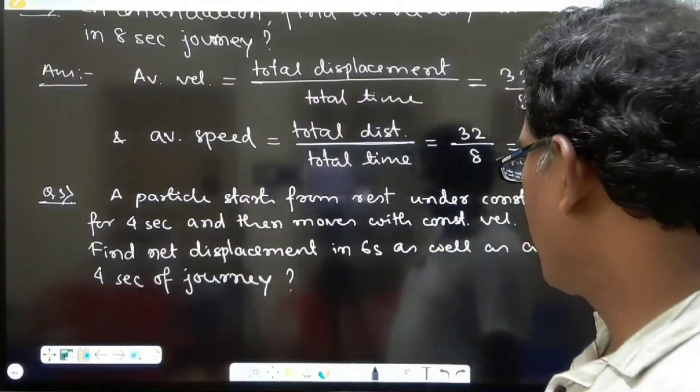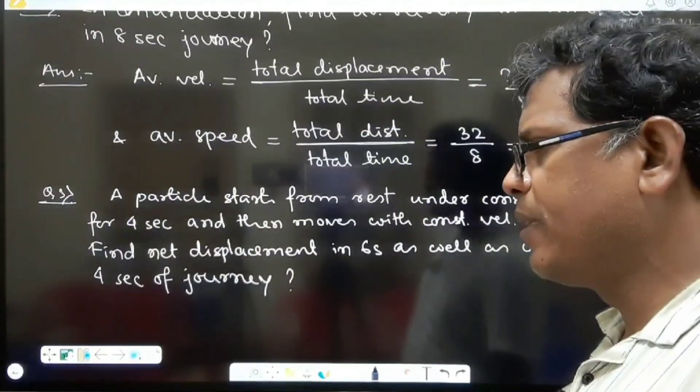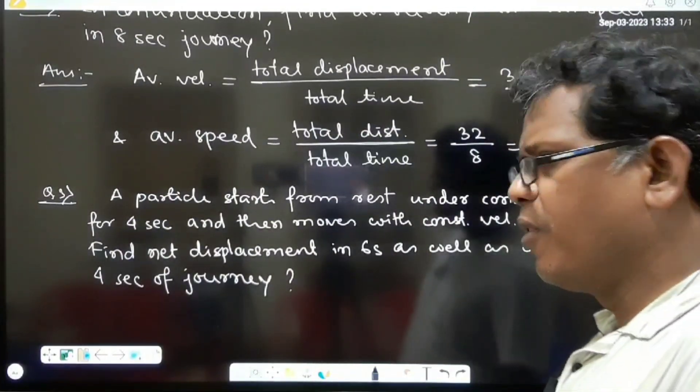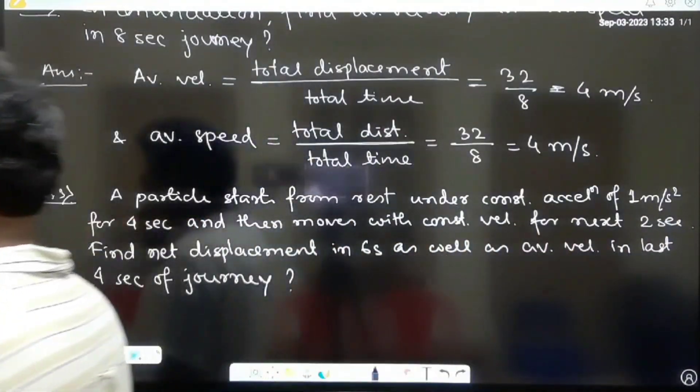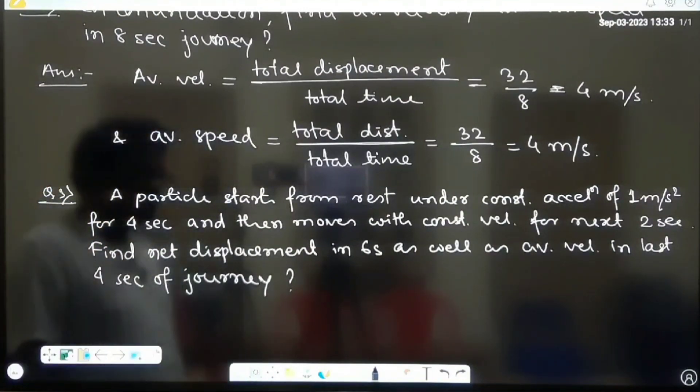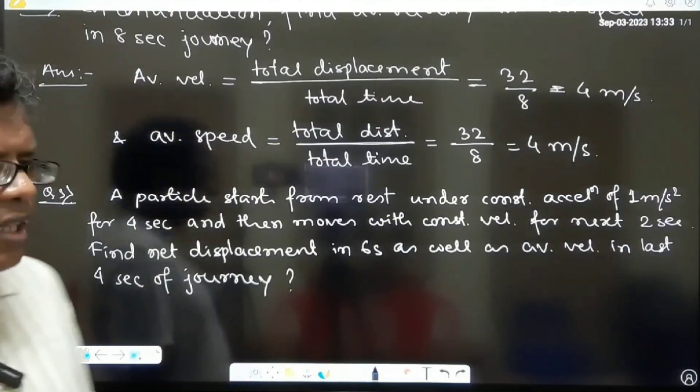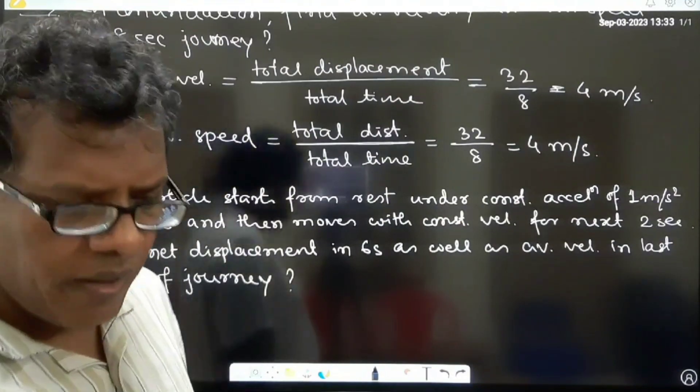After that particle moves with the constant velocity for next 2 seconds. That means at the end of first 4 seconds the accelerating factor is withdrawn. Once the acceleration is withdrawn the particle is able to continue its motion with the constant velocity and we are supposed to discuss it 2 seconds after that.